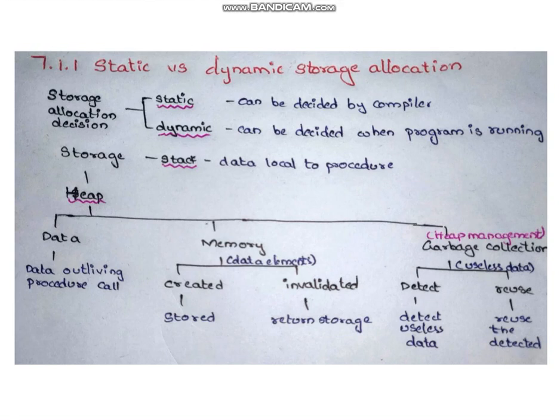Static vs. Dynamic Storage Allocation. The storage allocation decision is made based on the type of data, either static or dynamic. Static allocation can be decided during compilation, i.e., compile time. Dynamic allocation can be decided during running, i.e., runtime.